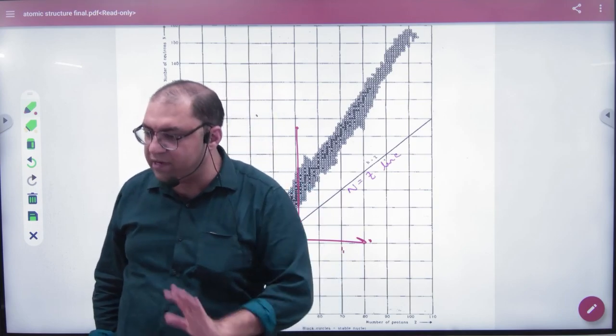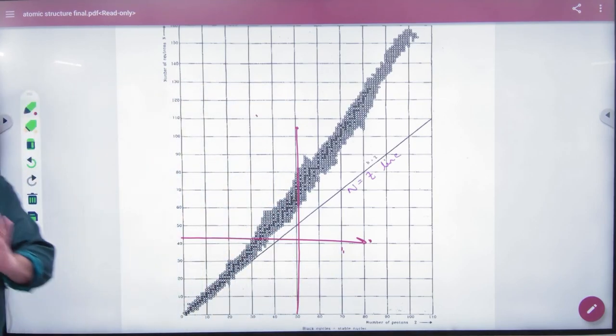So this graph, what does it mean? Stability. Which element is stable and which element is not. So this graph plotting check. Okay.